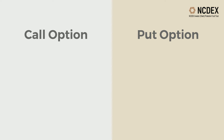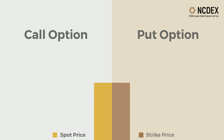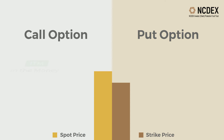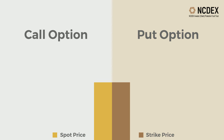In the case of options contracts, for both call and put, there are three possibilities. ITM — in the money: a call option is said to be ITM when the spot price is more than the strike price. A put option is said to be ITM when the spot price is less than the strike price.